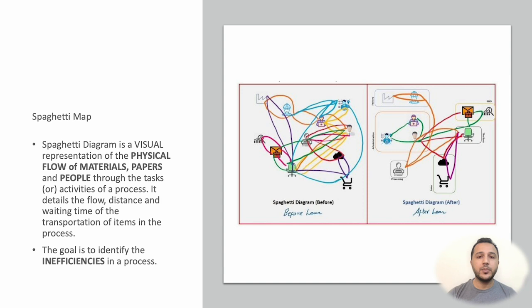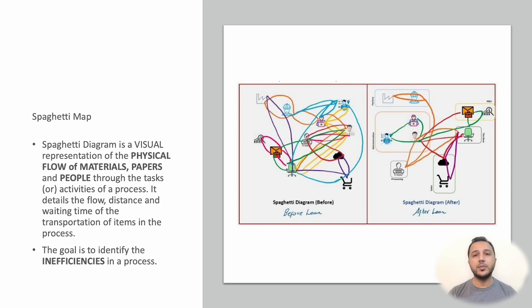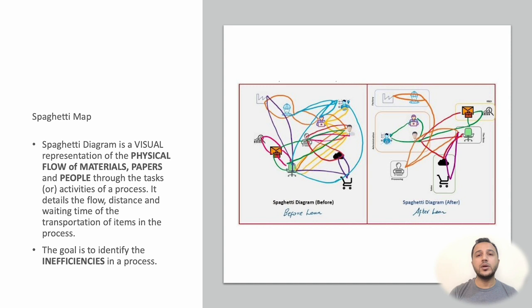Other than flowcharts, there are more ways to document a process. A spaghetti map shows how the physical flow of materials, papers, or people happens on a company floor, workshop, or customer service area. The concept has also been extended to information systems to show where heavy traffic is going to one area of the business.